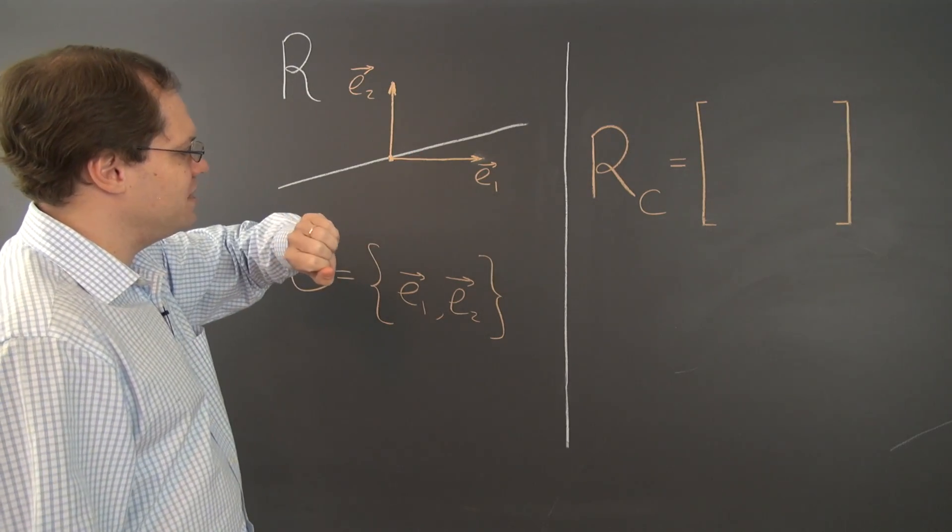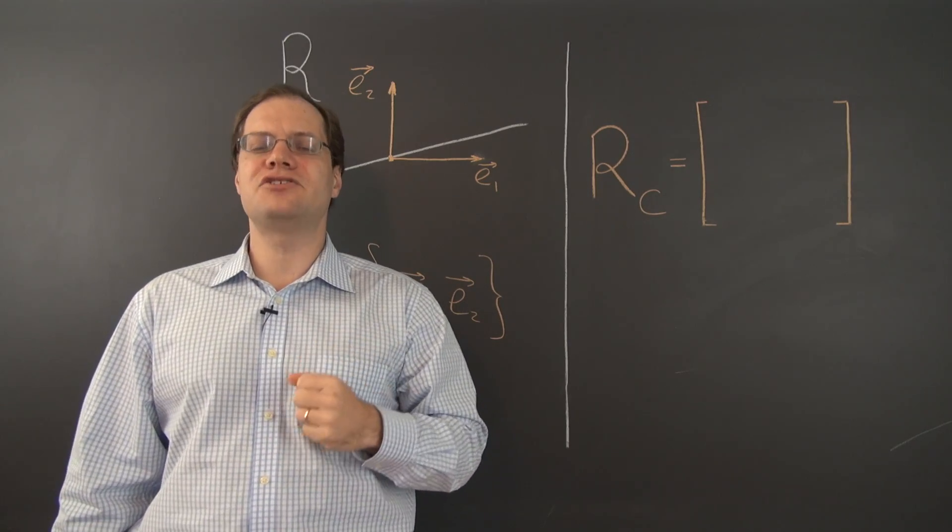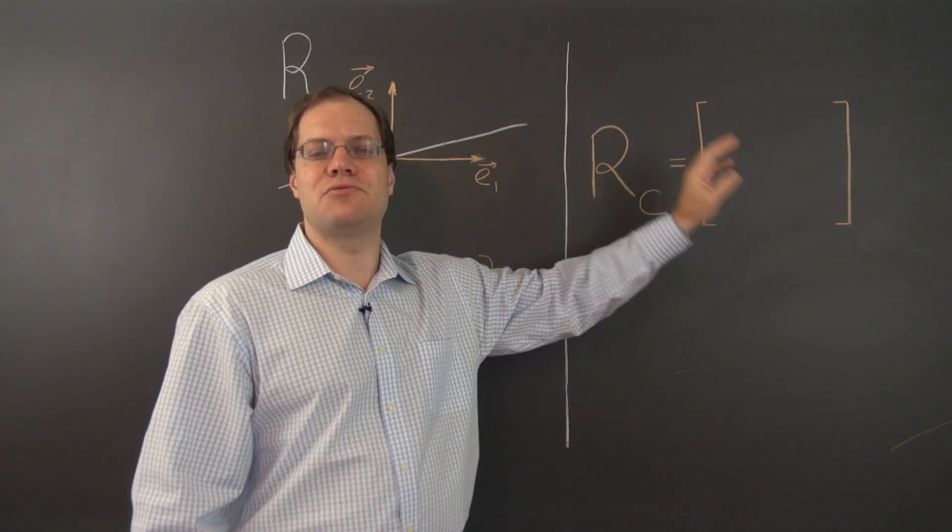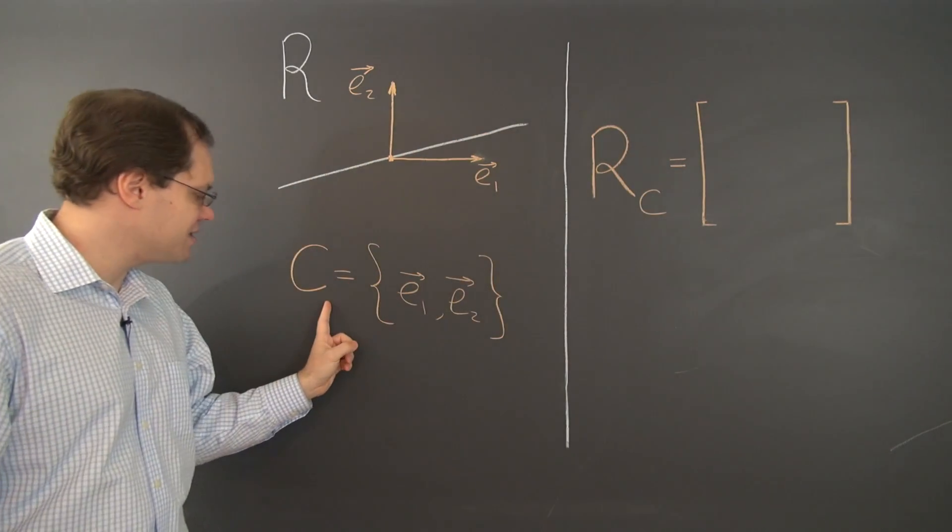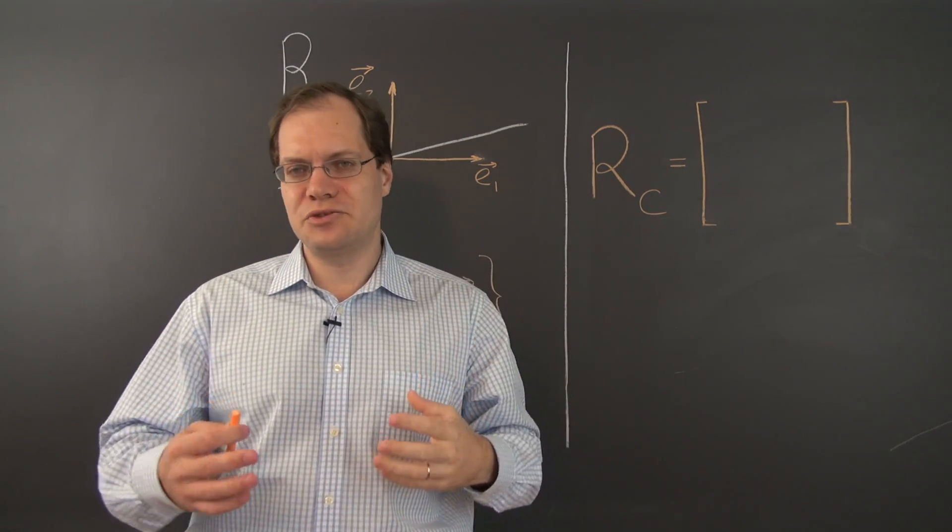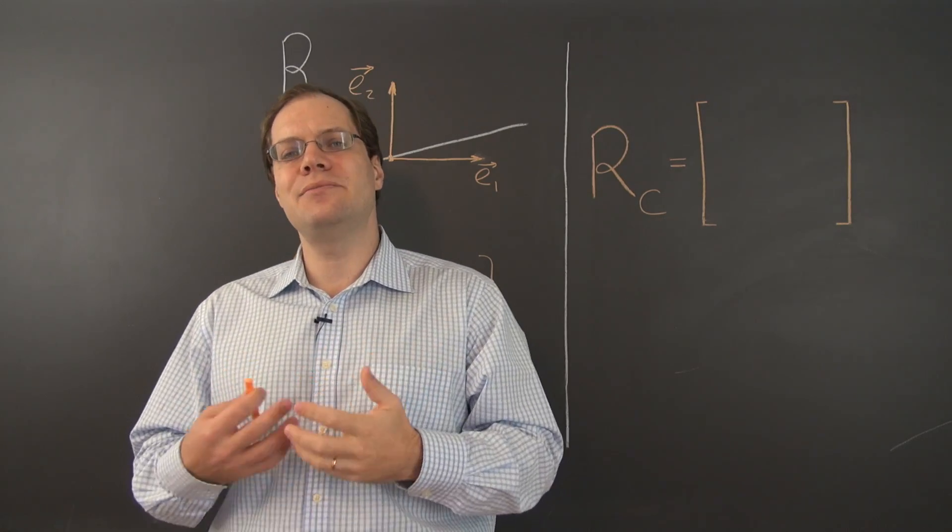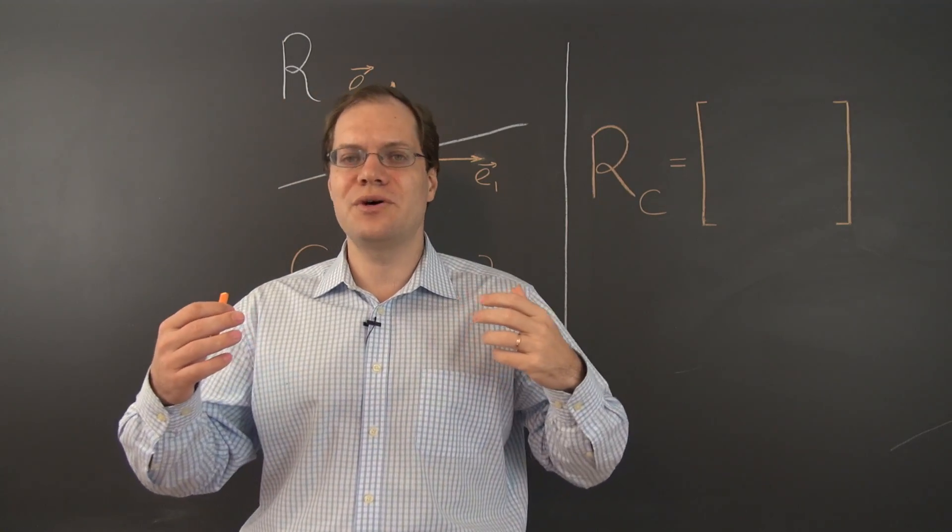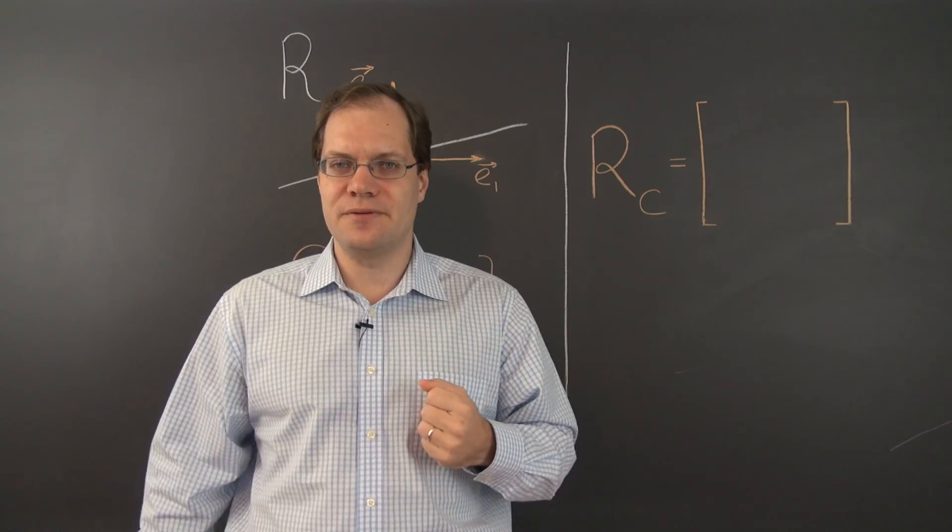All right, so we're going to work with this basis. We're still working with reflection as our linear transformation. And we will now compute the matrix that represents the reflection with respect to this Cartesian basis denoted by the letter C. And we'll actually do it twice. First we'll do it as engineers when we just approximate the numbers. And then we'll do it slightly more generally as an applied mathematician would.